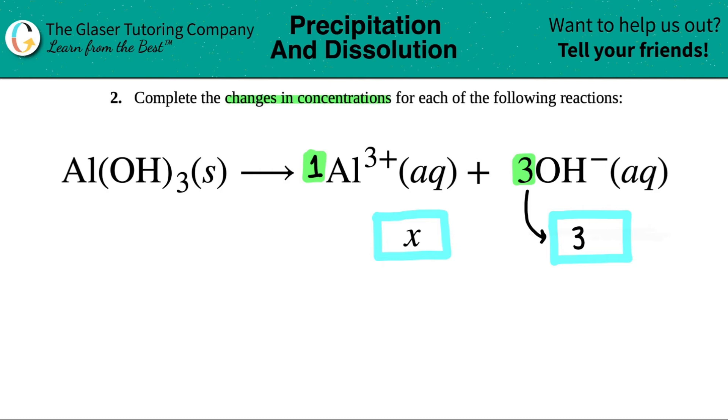This basically means if aluminum is going to change in concentration by some amount, the hydroxide is going to change three times more because it's a three to one mole ratio. And that's it.